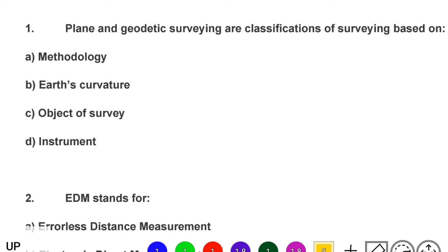The first question: plane and geodetic surveying is a classification of surveying based on — option A: methodology, option B: earth curvature, option C: object of survey, option D: instrument. The correct answer is option B, earth curvature.